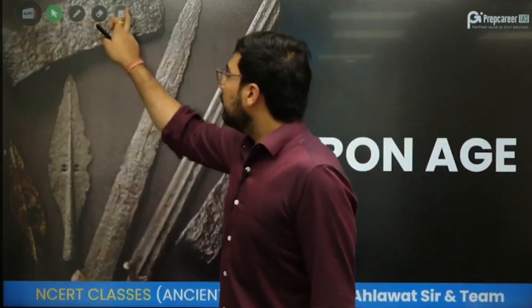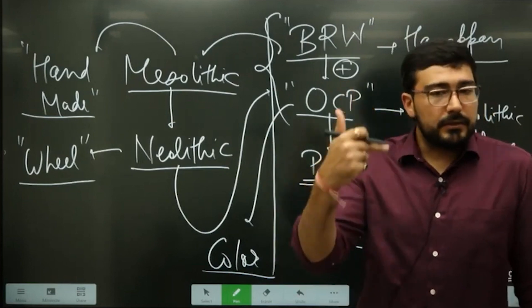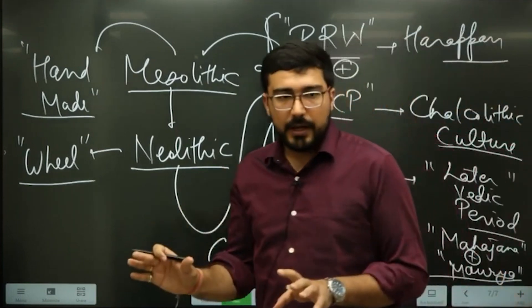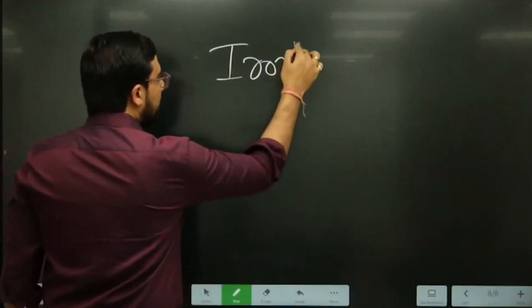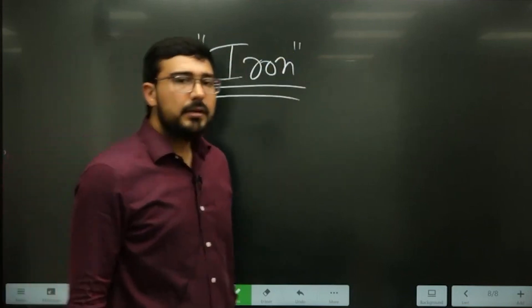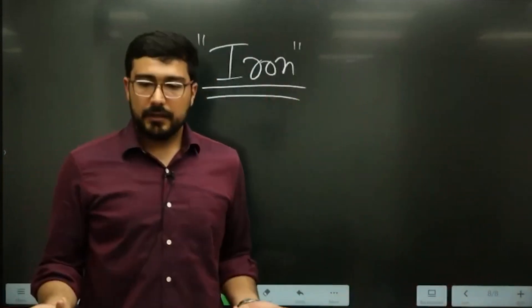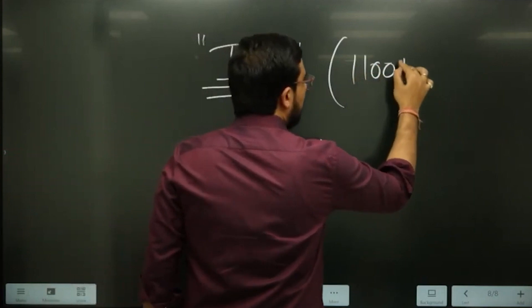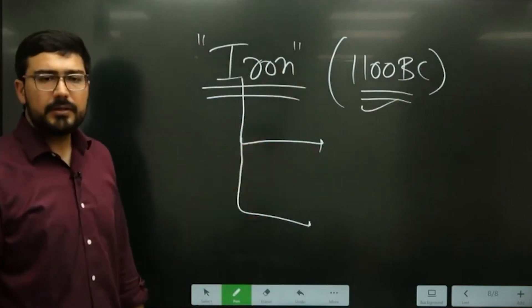Moving forward: after stone tools in the Paleolithic, Mesolithic, and Neolithic periods, that technology became outdated with the use of copper, and eventually the most transformative technology was the use of iron. Iron was path-breaking because it led to the construction of war machines and the creation of the biggest empires in India. Iron becomes usable in India from around 1100 BC — some say 1200 BC, but 1100 BC is the most widely accepted date. The beginning of the Iron Age was different in North India and South India.